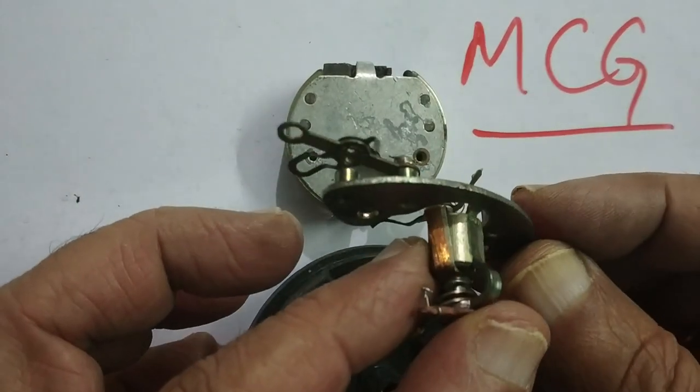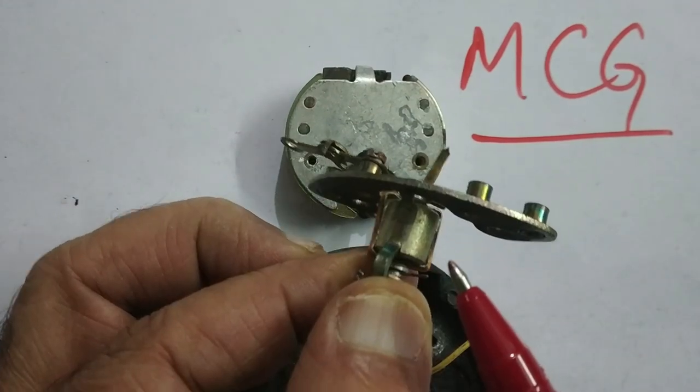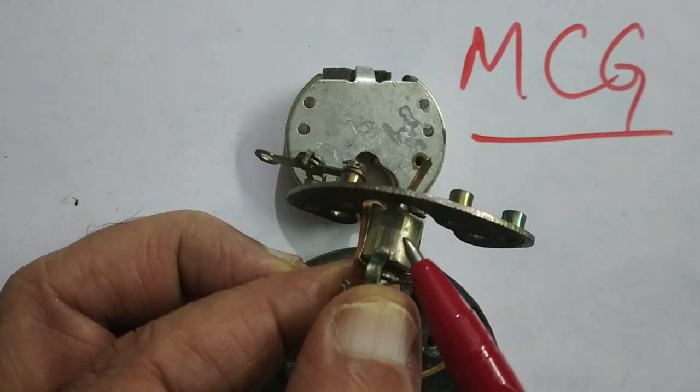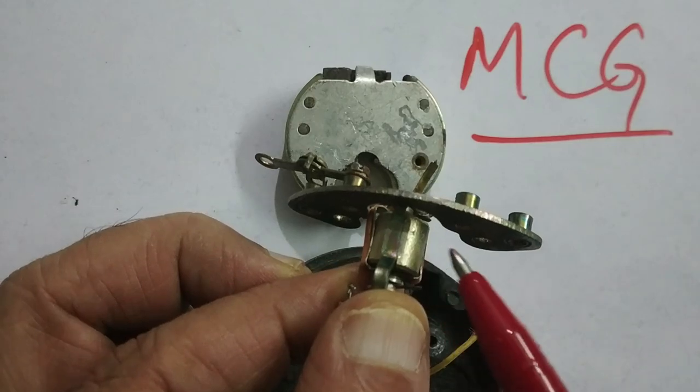And here you can observe the rectangular coil. So, this is the rectangular coil. In the middle of the rectangular coil, there is a metal cylinder.